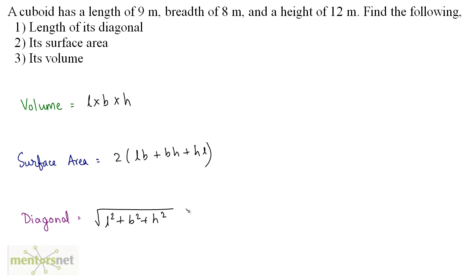So let's first calculate the diagonal. It is under root of L square plus B square plus H square. So this will be under root of length is 9, so 9 square plus breadth is 8, 8 square plus height is 12, so 12 square. And that will be under root of 9 nines are 81 plus 64 plus 144.